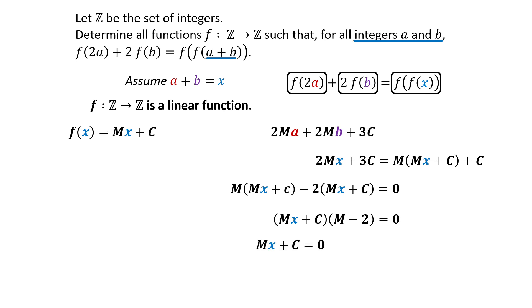To satisfy Mx plus C equals 0 for all integers of X, both M and C must be 0. So the function F of X is 0.